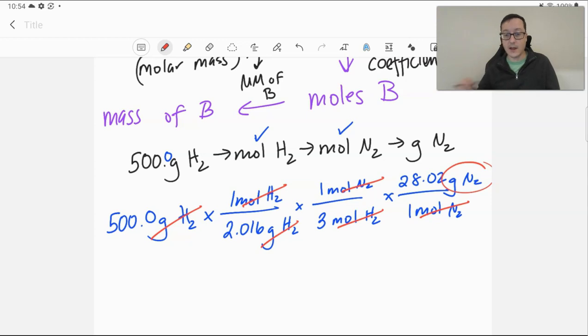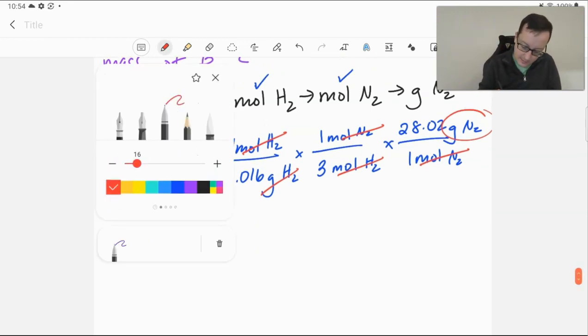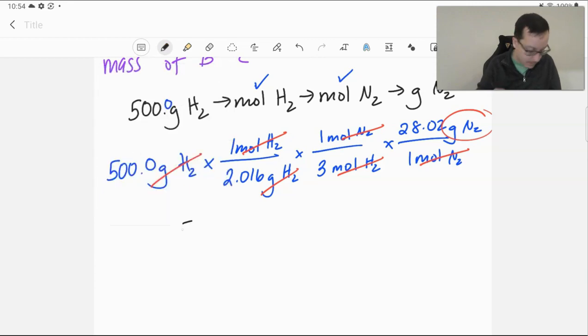All right. So, we can go ahead and do the math. 500 divided by 2.016 divided by 3 times 28.02. And we get quite a bit. We end up with needing 2,316 grams of nitrogen. And that's going to be with our sig figs. We're always going to base our sig figs based off of our original measurement. So, in that case, it's 500 with 4 sig figs. So, our final answer should have 4 sig figs. And so, that's the amount of nitrogen we're going to need in order to react with all of this hydrogen.